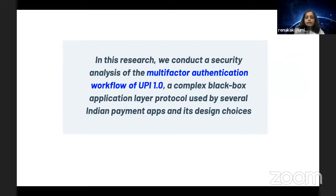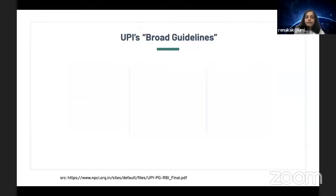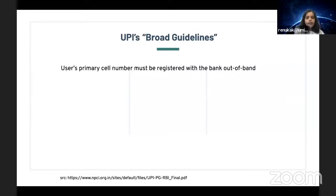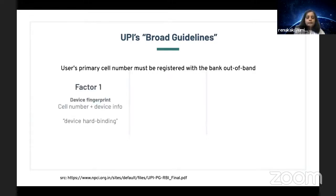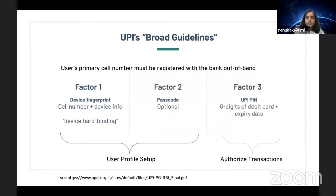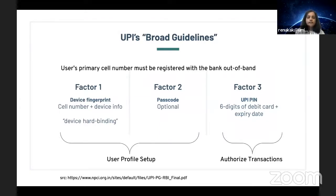Our research conducts a security analysis of the multi-factor authentication workflow of UPI 1.0, which is a complex black-box application-layer protocol used by several Indian payment apps. NPCI has published a few broad guidelines: the user's primary cell number must be registered with the bank out of band, and NPCI stipulates three factors of authentication. The first factor is a device fingerprint—an association between the cell number and device information—and the server-side association is called device hard binding, which NPCI calls the most security-critical part of the protocol.